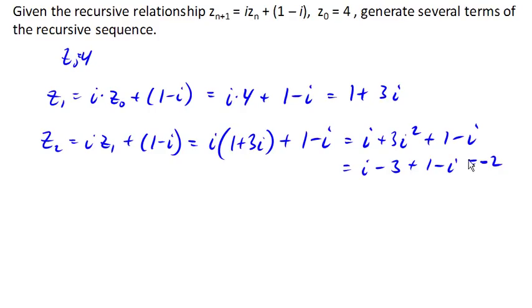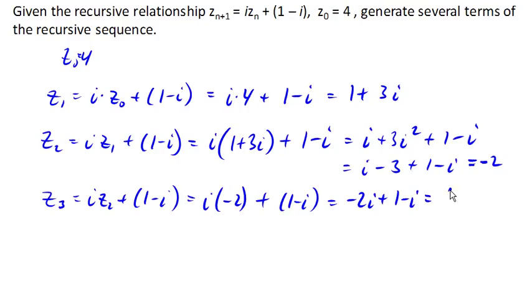If we continue this, the next term would be i times z_2 plus 1 minus i would be i times negative 2 plus 1 minus i would be negative 2i plus 1 minus i is 1 minus 3i. And if we did the next term, the next term turns out to be 4, and the next term turns out to be 1 plus 3i. And it turns out something interesting happens where this pattern starts to repeat itself. So this is a recursive relationship defining a sequence, but the sequence ends up repeating itself every 4 terms.